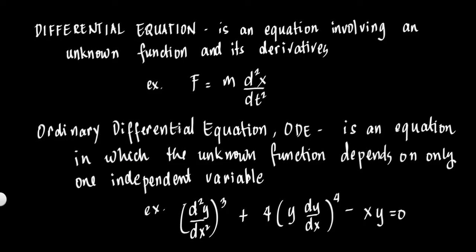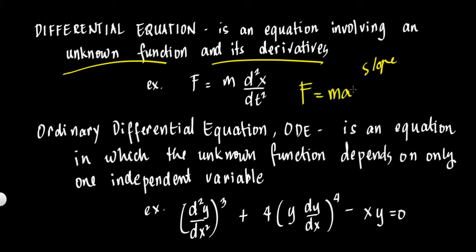A differential equation is an equation involving an unknown function and its derivatives — or simply, an equation that has slope in it. For example, Newton's law of motion: F equals m times d²x/dp². In physics, acceleration is the second derivative of position, so d²x/dp² times mass equals force. This equation is actually a differential equation, so Newton's law is a differential equation.